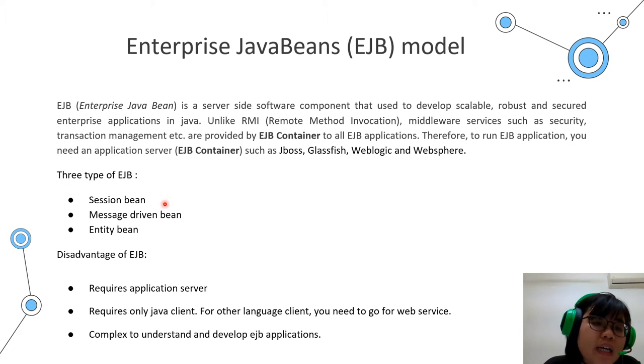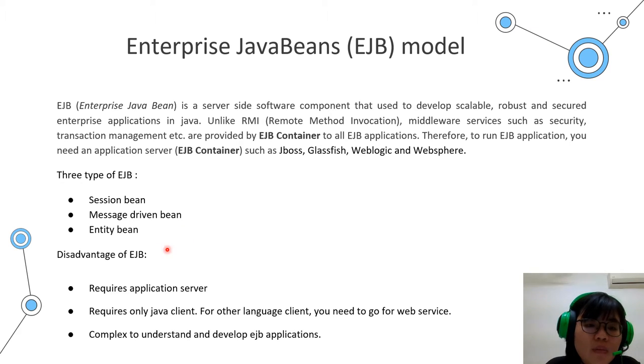The three types of EJB are: session bean, message driven bean, and entity bean. The disadvantages of EJB also number three.